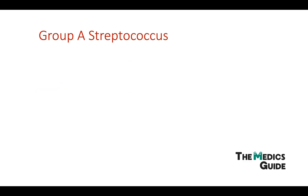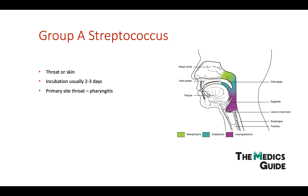Now, a bit about group A streptococcus — they can colonize the throat or the skin, and once colonized they have a few days' incubation period. After that, people start to get the symptoms. On the throat this can cause pharyngitis, and if you look at this picture you can see the exact location that this would happen. We get inflammation around the pharynx.